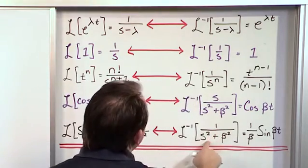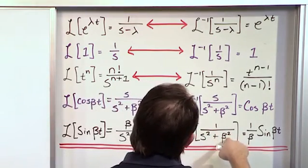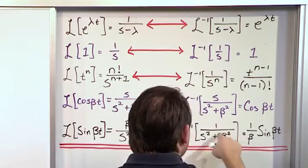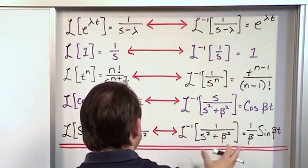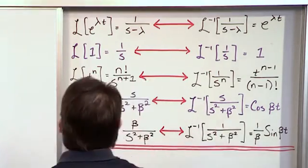So we get down to the bottom. This kind of does look like something we might be able to use, because we have 1 on the top and s squared plus 3. But it doesn't quite look like beta squared, so we're not sure if it works, but I think we're going to be able to use this.